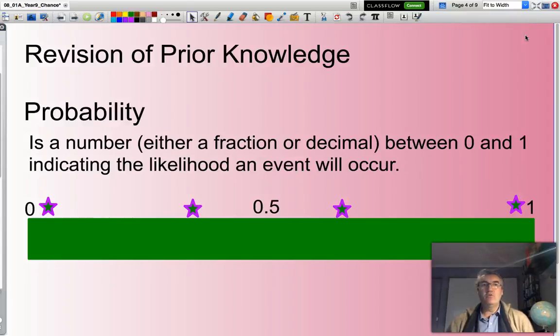Well hello and welcome. In this presentation we are going to investigate probability or chance. Now as a brief introduction, probability is a number. Now that number can be either a fraction or a decimal and must be between 0 and 1, which indicates the likelihood that an event will occur.